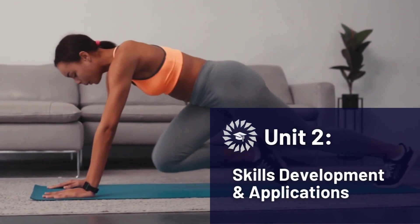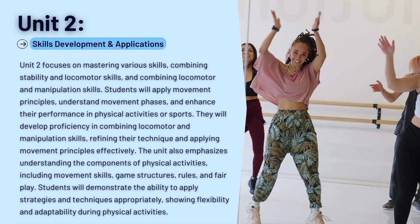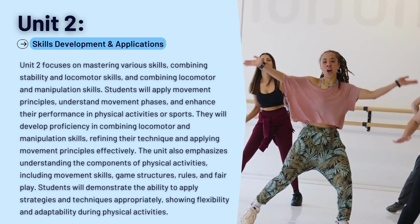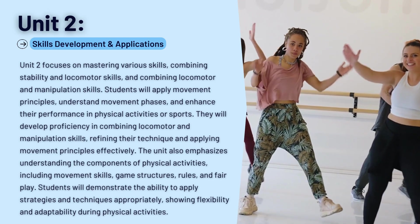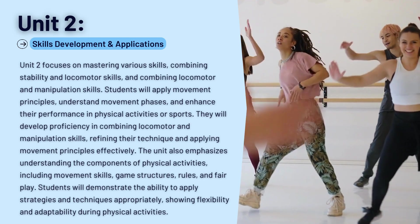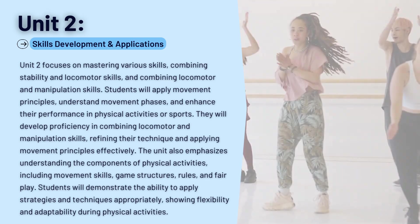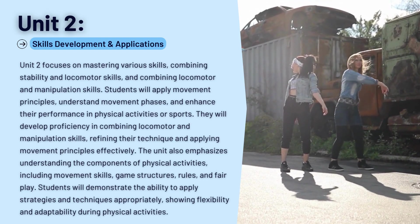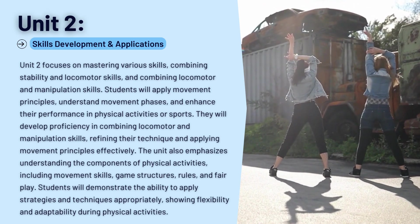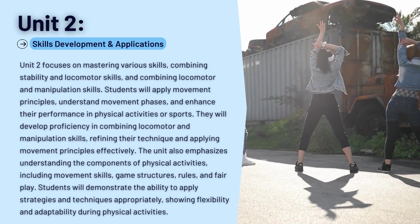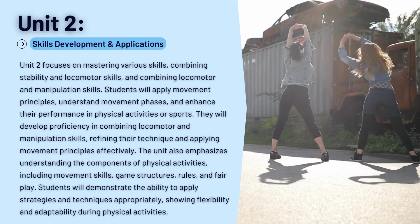Unit 2: Skills Development and Applications. Unit 2 focuses on mastering various skills, combining stability and locomotor skills, and combining locomotor and manipulation skills. Students will apply movement principles, understand movement phases, and enhance their performance in physical activities or sports. They will develop proficiency in combining locomotor and manipulation skills, refining their technique and applying movement principles effectively. The unit also emphasizes understanding the components of physical activities, including movement skills, game structures, rules, and fair play. Students will demonstrate the ability to apply strategies and techniques appropriately, showing flexibility and adaptability during physical activities.